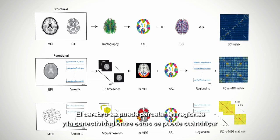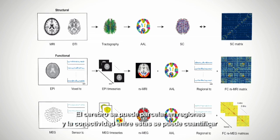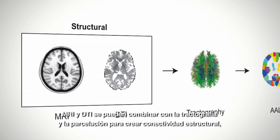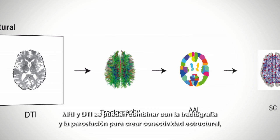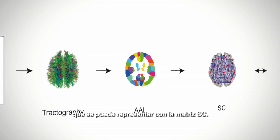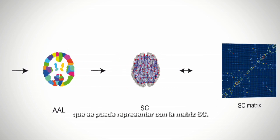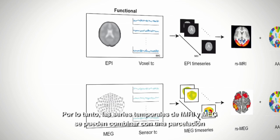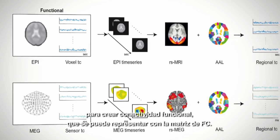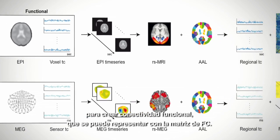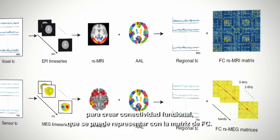The brain can be parcellated into regions and the connectivity between these can be quantified. MRI and DTI can be combined with tractography and parcellation to create structural connectivity (SC), which can be represented with the SC matrix. fMRI and MEG time series can be combined with parcellation to create functional connectivity (FC), which can then be represented with the FC matrix.